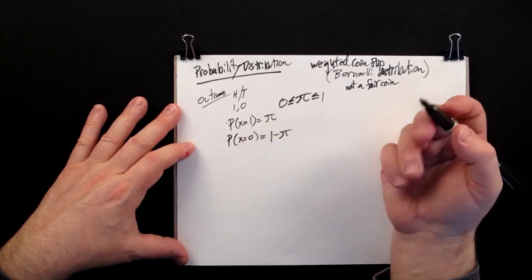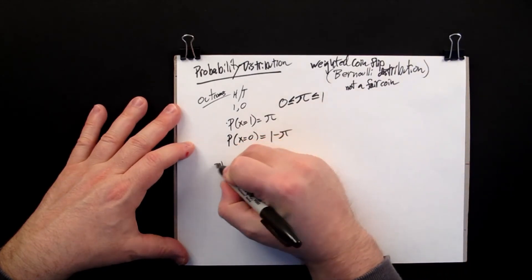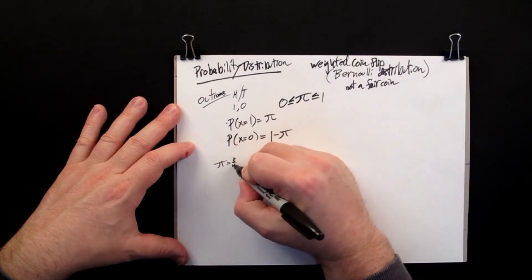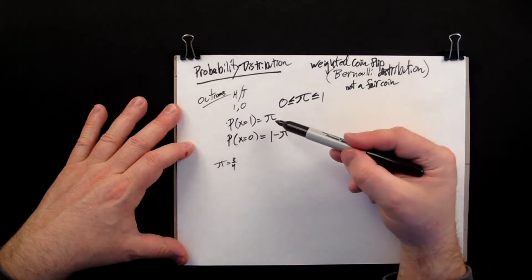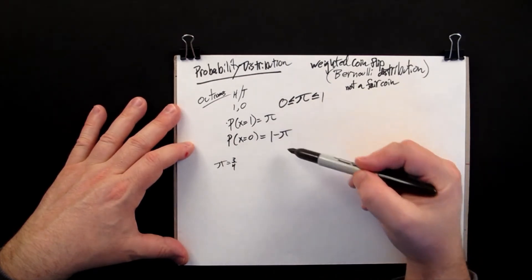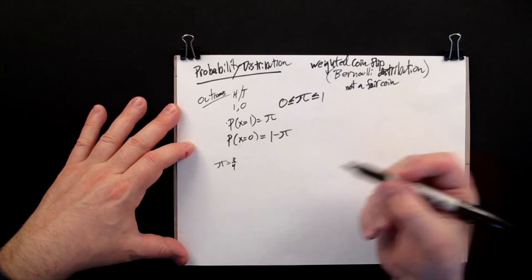Okay. So, for example, let's let the weighting equal 3 quarters. So you have heads come up 3 fourths of the time and tails comes up 1 fourth of the time.